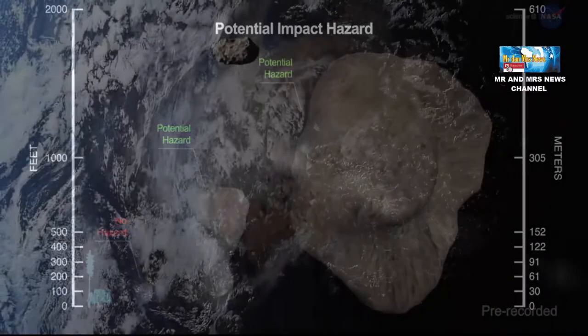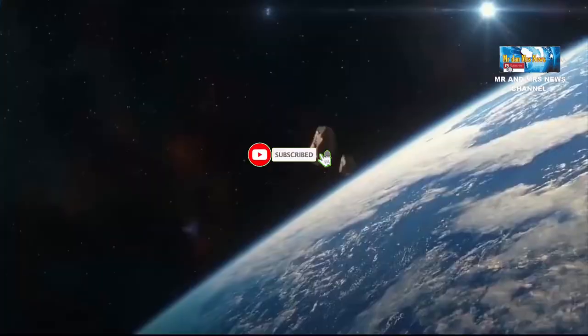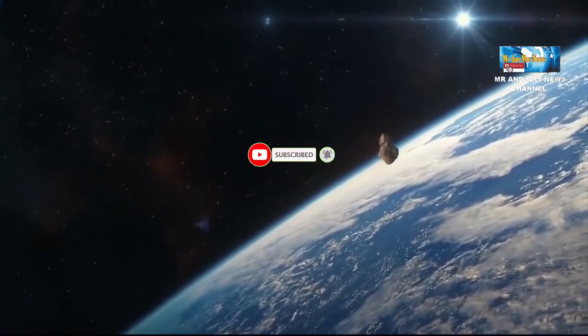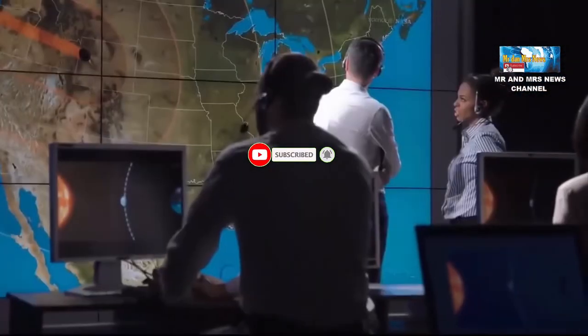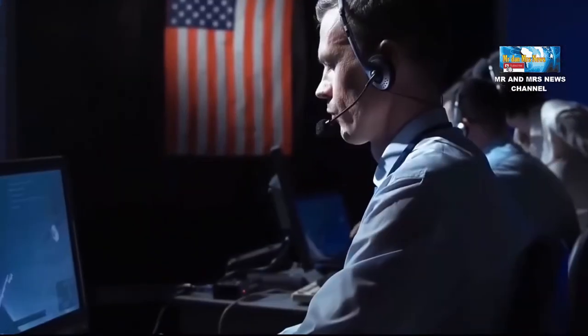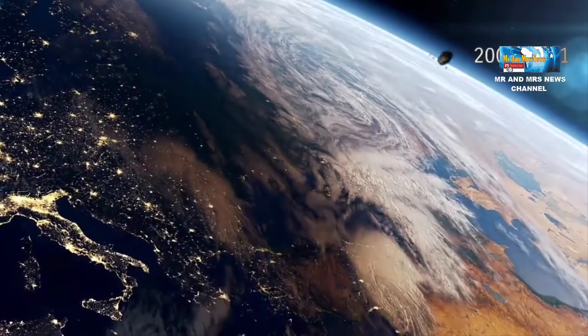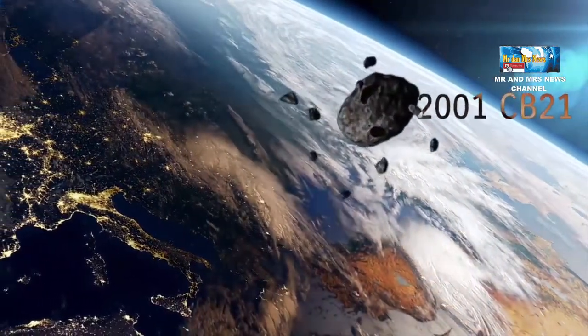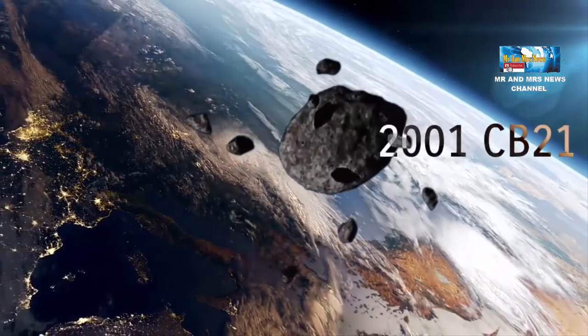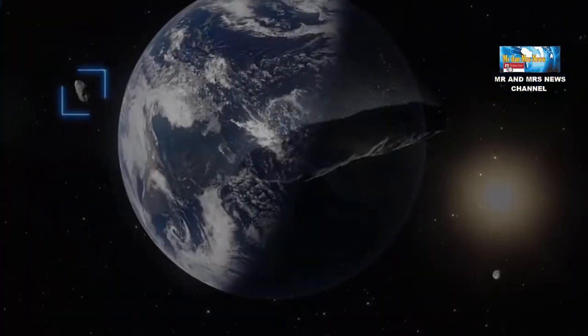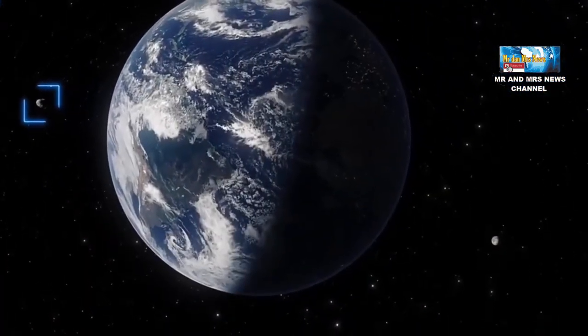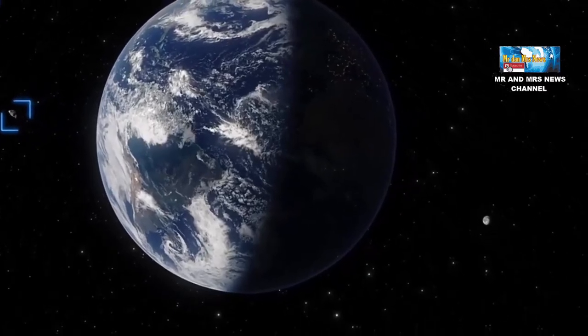However, potentially hazardous does not mean it will hit Earth. Rather, this classification exists to provide information about celestial objects and their approach to Earth. Fundamentally, asteroids larger than 500 feet will not approach Earth closer than 4.6 million miles. A celestial object, especially an asteroid, has potential to collide if it enters the PHA or Potentially Hazardous Asteroid zone.